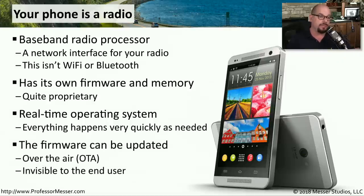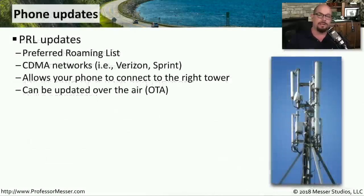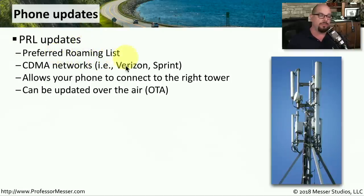The firmware associated with this baseband radio processor occasionally needs to be updated. Most often, this update occurs over the air, or OTA. You don't really see this happening, although sometimes you may get a message that says the radio has been updated for your cellular network. One set of updates you might get are PRL updates — this is the preferred roaming list. These are common to CDMA networks, which are Verizon and Sprint networks here in the United States. These updates tell your phone which tower it should be communicating with, and usually these updates are provided over the air.